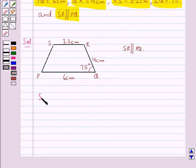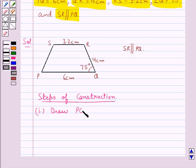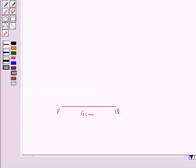Now let's construct the trapezium PQRS step by step. First of all, we draw PQ equal to 6 cm. We have drawn PQ equal to 6 cm.